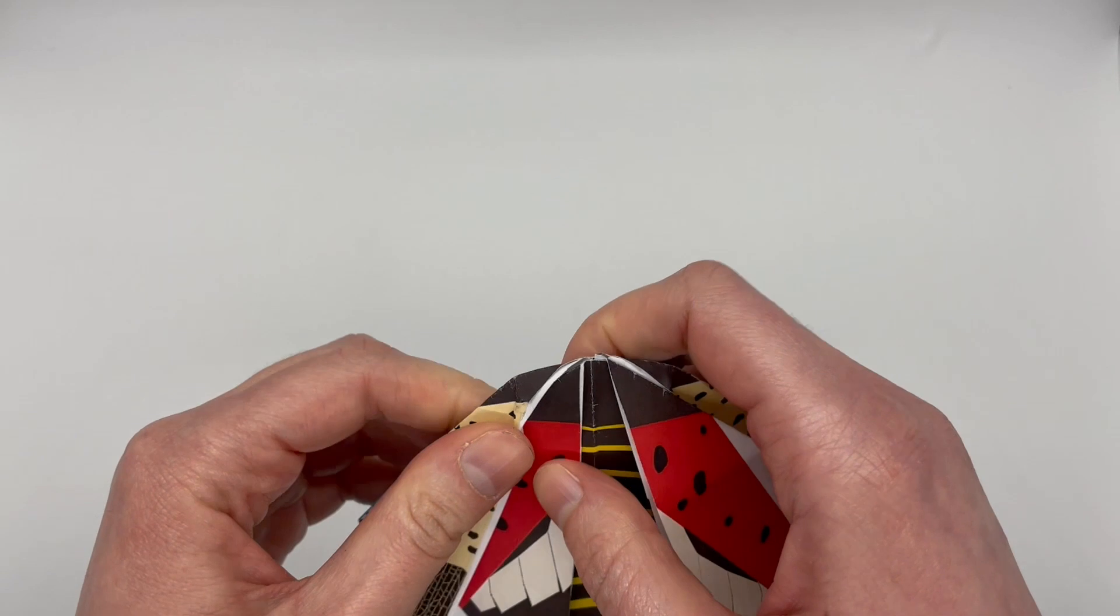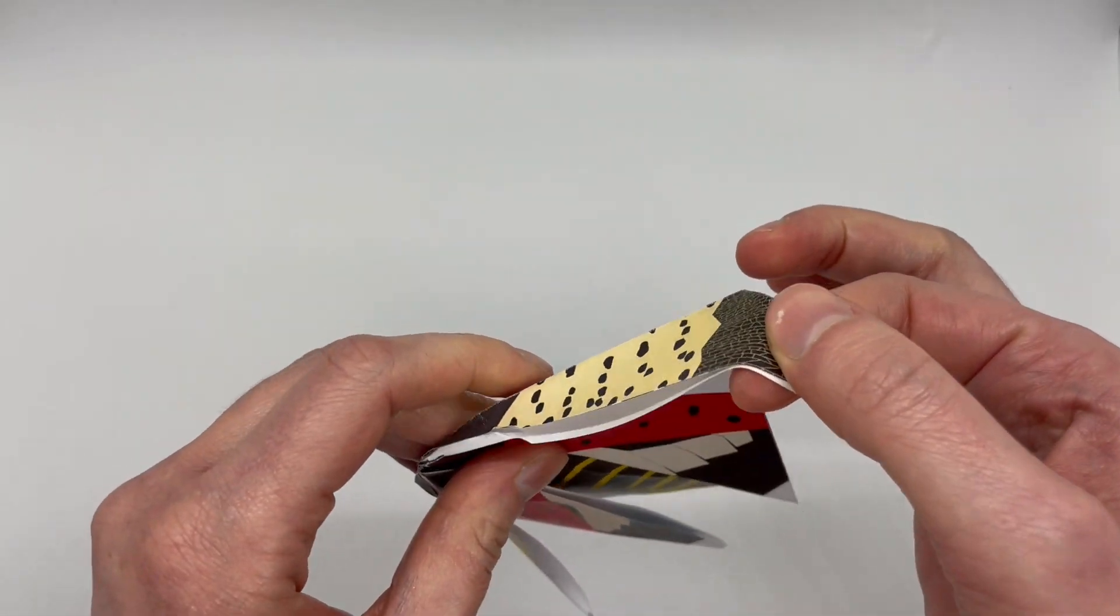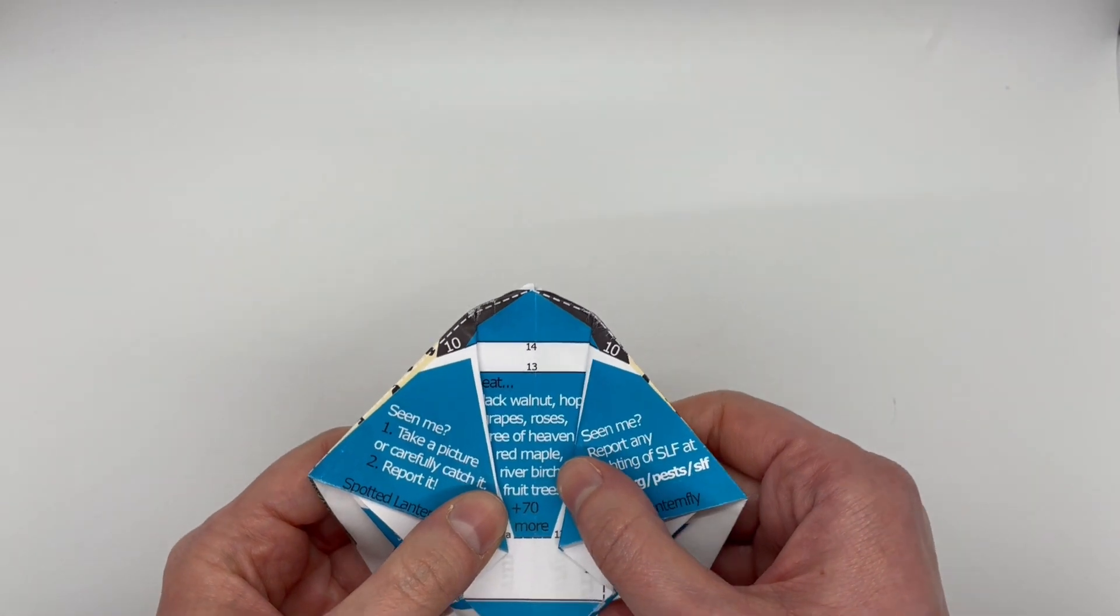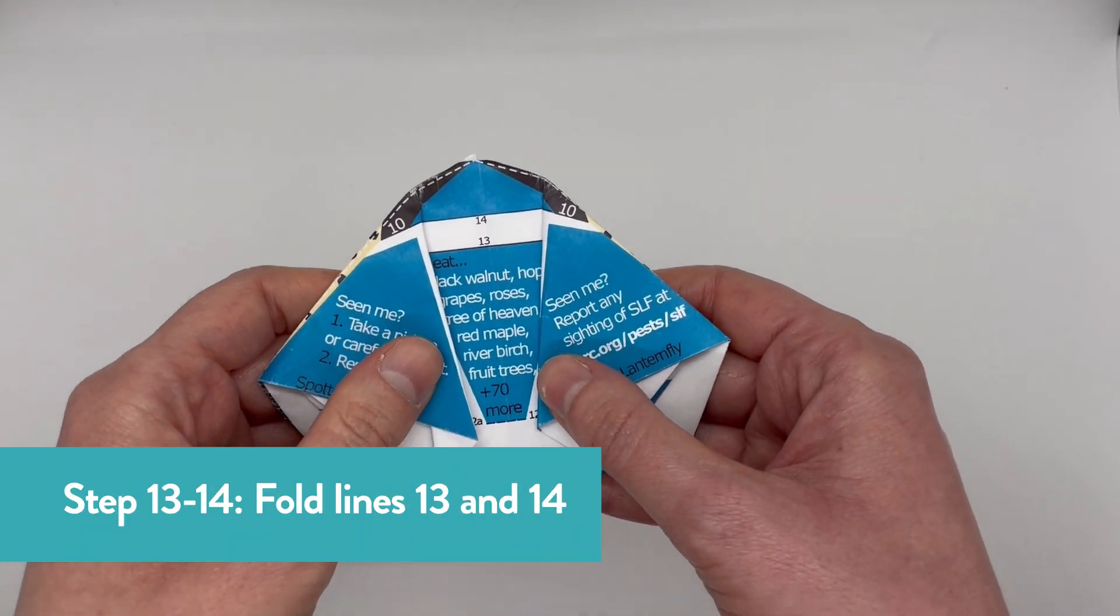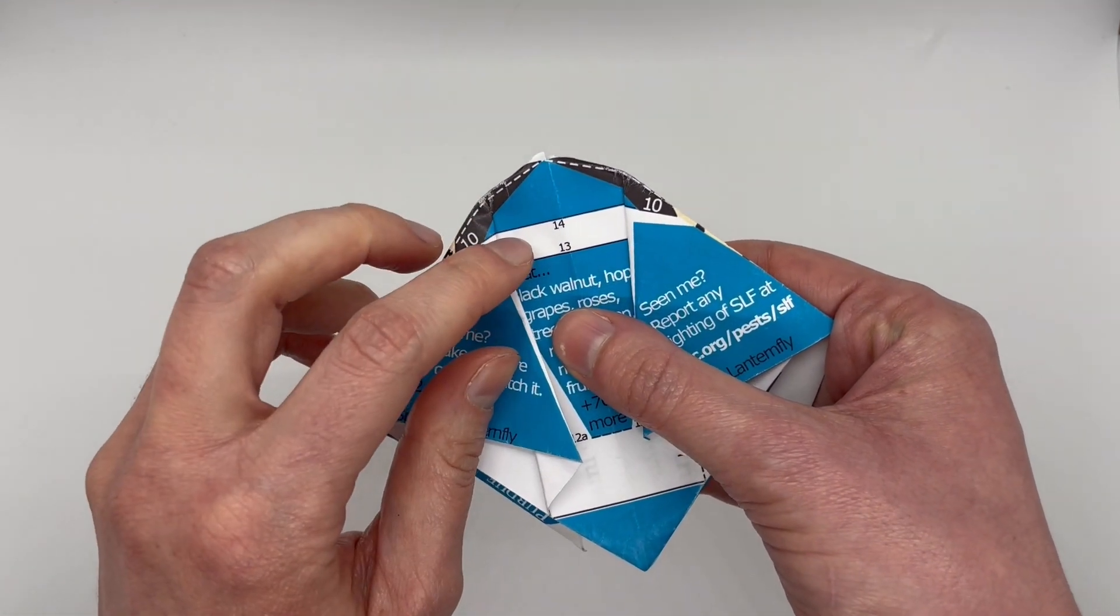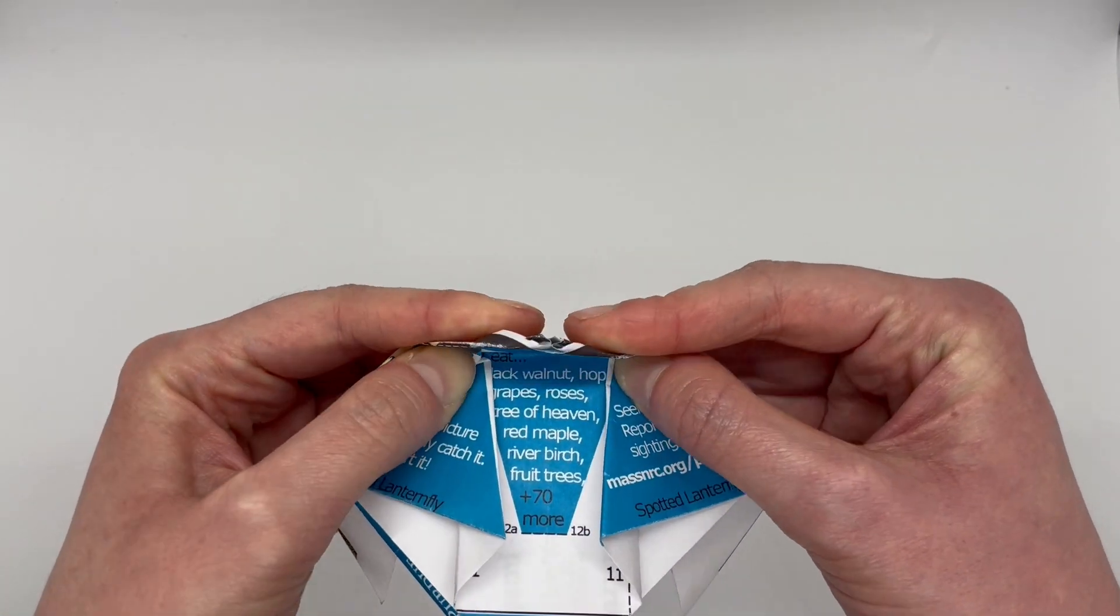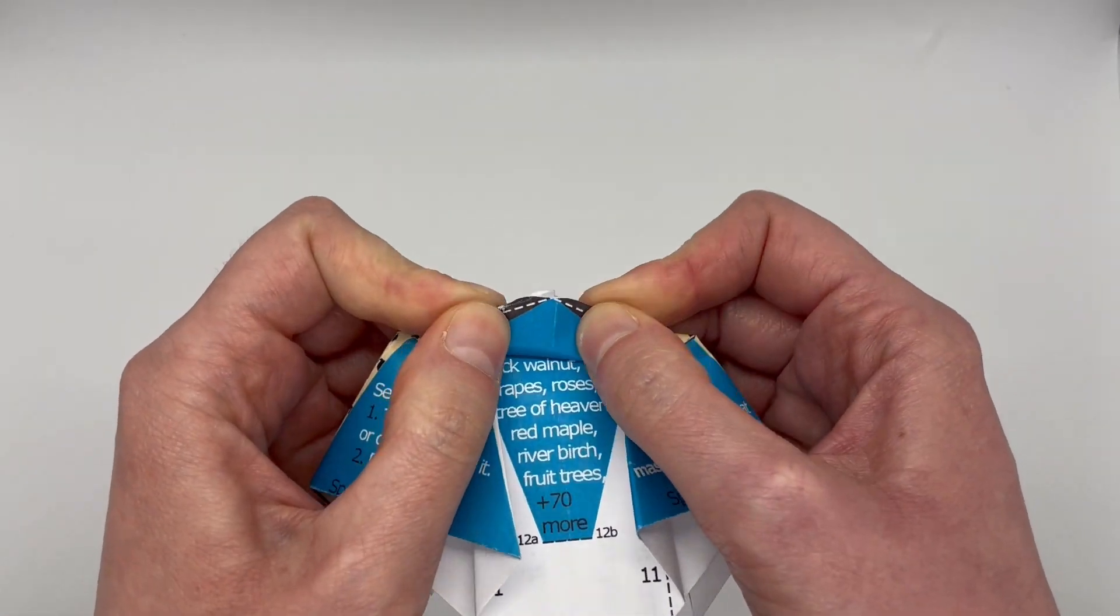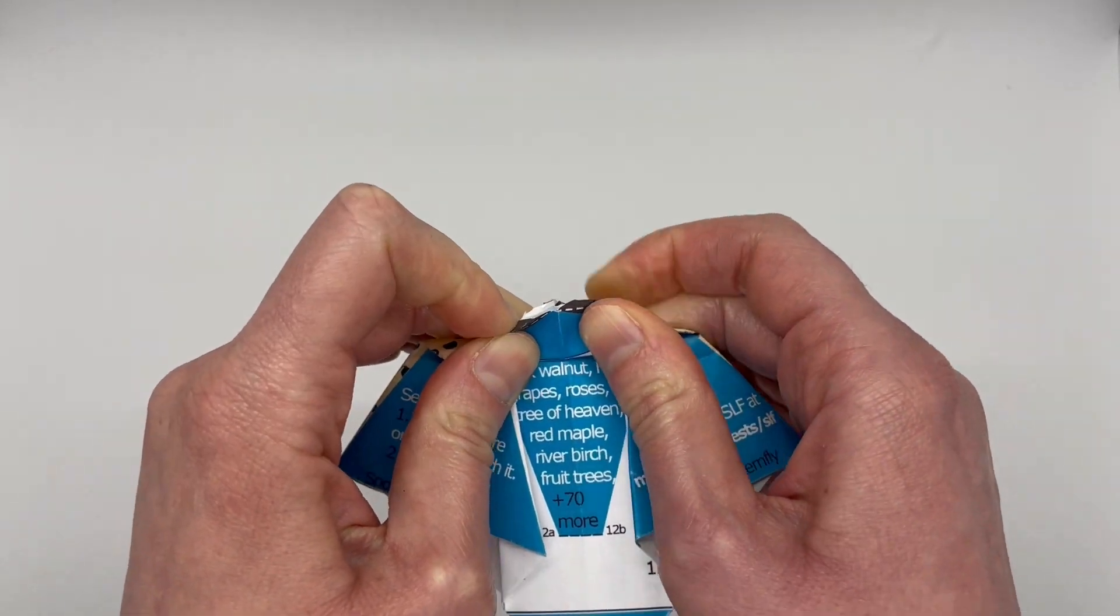When you're done, you may need to pop the brown wings over the red wings on the front. Next, fold the top of the head back along the line labeled 13. This step helps make your spotted lanternfly look segmented, just like a real insect.